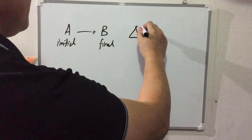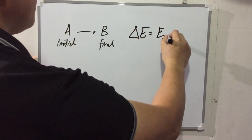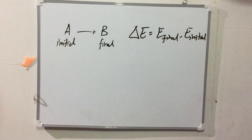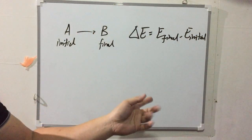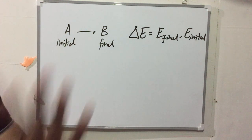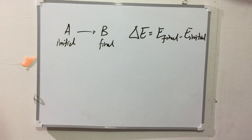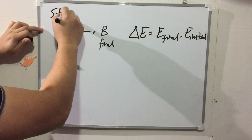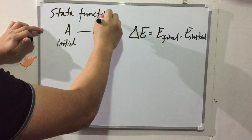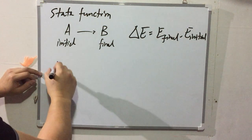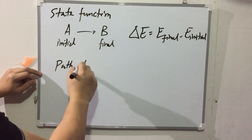You'll see this behavior in all properties where we put the delta on: delta H, which is enthalpy; delta V, change in volume; delta S, change in entropy — we'll see all of those later on. So this is what a state function looks like. The opposite would be what we call a path function.